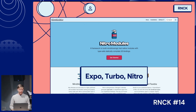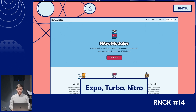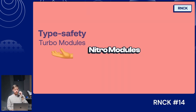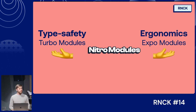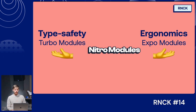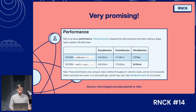Next, Nitro Modules. We have Expo, Turbo, and now Nitro Modules from Marc Rousabbe from Margelo. It's a new way of building native libraries in React Native. The promise is type safety of Turbo Modules with a tool called Nitrogen — a code generator for Nitro Modules — with the promise of better ergonomics, similar to Expo Modules with writing modules in Swift and Kotlin. It's incredibly promising; the benchmarks provided by the creator look really, really good.